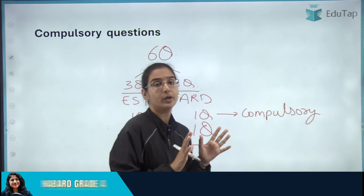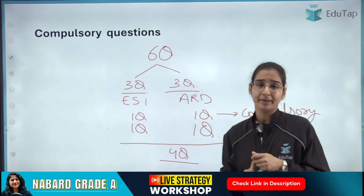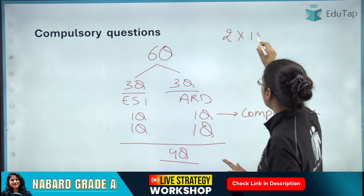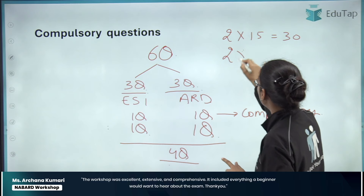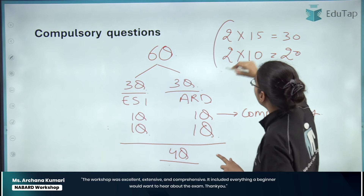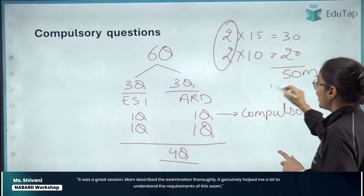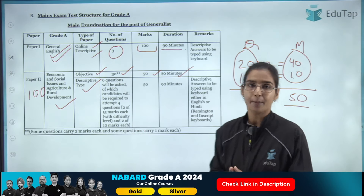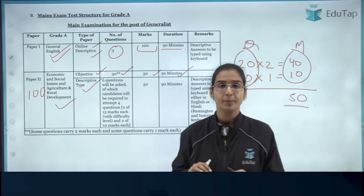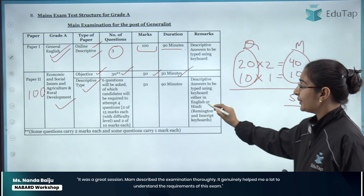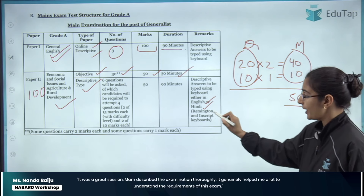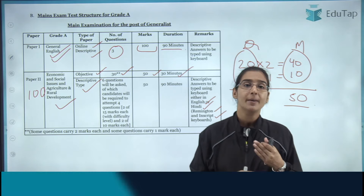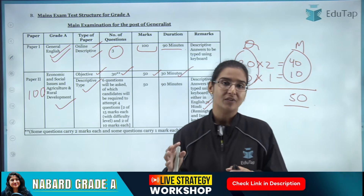That is the pattern and structure of Paper 2. As for marks distribution among the 4 questions: 2 questions will be worth 15 marks each (totalling 30 marks) and 2 questions will be worth 10 marks each (totalling 20 marks), so all 4 questions together are worth 50 marks. The descriptive paper has to be typed on a keyboard, and you can type either in English or in Hindi. For Hindi, Remington and InScript keyboards will be provided.